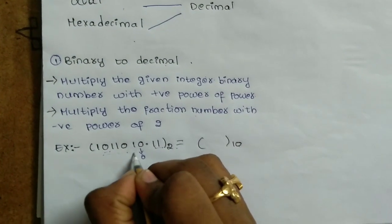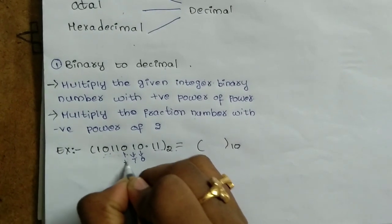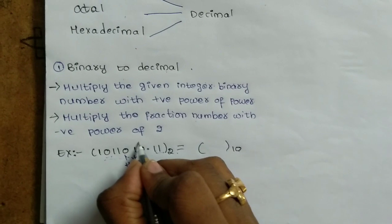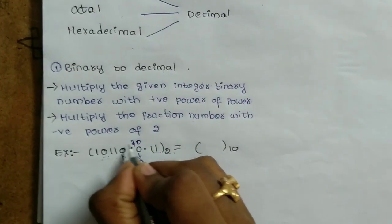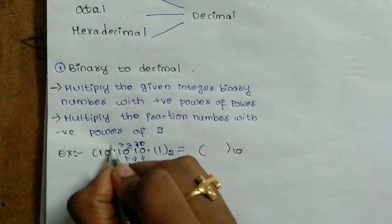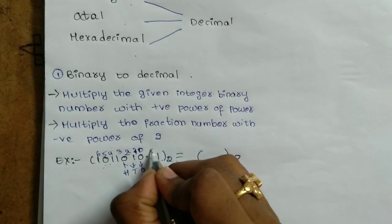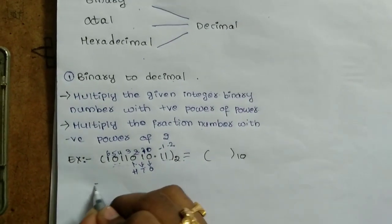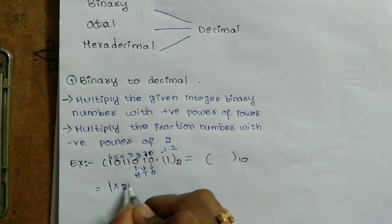The powers are assigned: positive powers 1, 2, 3, 4, 5, 6 for the integer part, and negative powers minus 1, minus 2 for the fractional part.